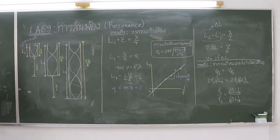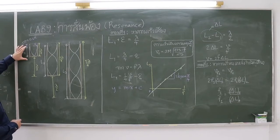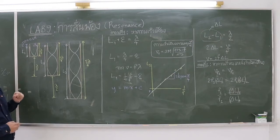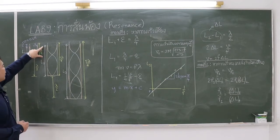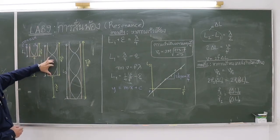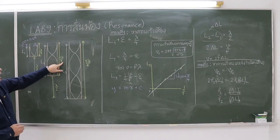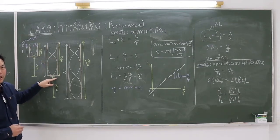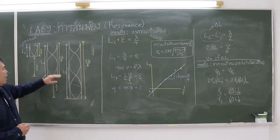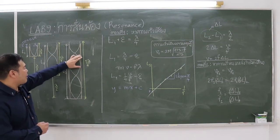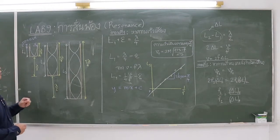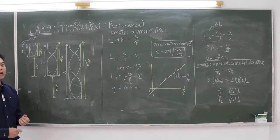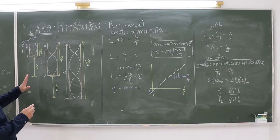If the length of the tube is one-fourth of the wavelength of the sound, a standing wave can form. If the length of the tube is one-fourth plus one-half of the wavelength of the sound, a standing wave can form as well. Or if the length is increased by another half wavelength — totaling five-fourths of the wavelength — a standing wave can also form. In these three cases, standing waves can form.